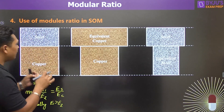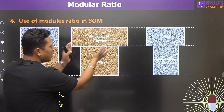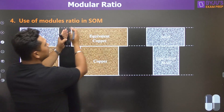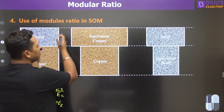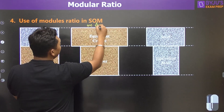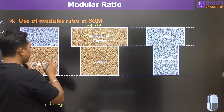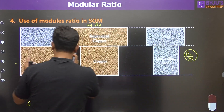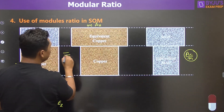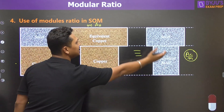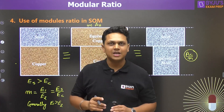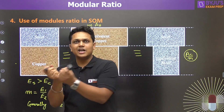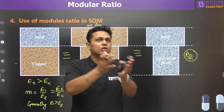Steel is stronger than copper. If I convert steel into copper, I will need a greater area of copper — it becomes m times the area of steel, so the area increases. If I convert copper into the steel equivalent, the area becomes A_copper / m, so the width decreases. All three representations — original, equivalent copper, equivalent steel — give the same analysis. I hope you can now link the concept of modular ratio from strength of materials to RCC as a collective topic.